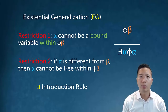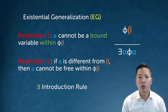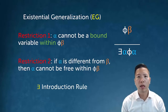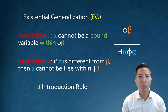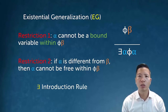EG has a couple of restrictions. From phi beta, I can introduce the existential as the main operator to get 'there exists alpha, phi alpha.' Restriction one: alpha cannot be a bound variable within phi beta — the same restriction as in UI. Restriction two: if alpha is different from beta, then alpha cannot be free within phi beta. This second restriction is odd but I'll show examples of what it looks like in practice.